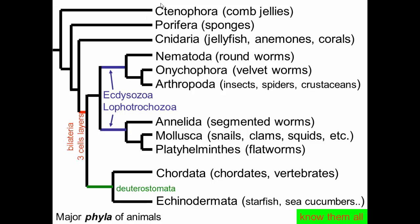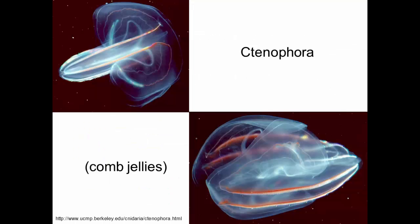Let's look at the basal three clades: the ctenophores, the porifera, and the cnidarians. Ctenophores are comb jellies — they look like jellyfish, they swim around, they live in the oceans, but they do not have stinging cells. They don't have nematocysts.